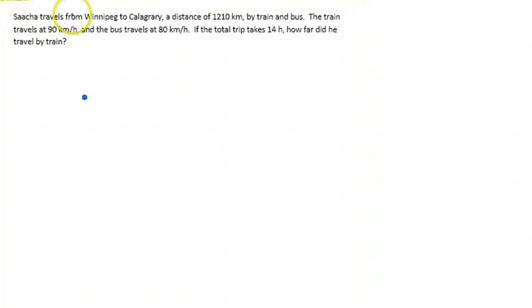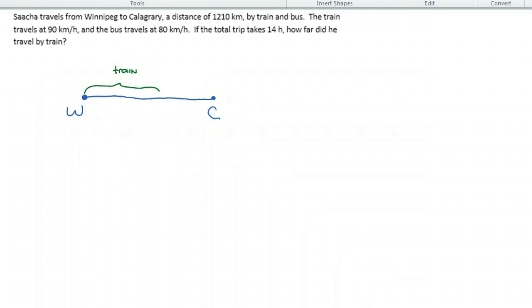Sasha travels from Winnipeg to Calgary. So we're going to call this Winnipeg. We're going to put another point here and call that Calgary. It's spelled wrong up here. So it's traveling from here to here. Now, some portion of that trip is done by train, we don't know how far. And then some portion of that trip is done by bus, and I don't know how far.